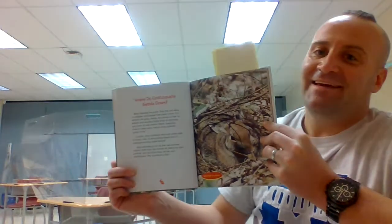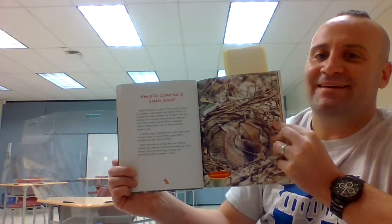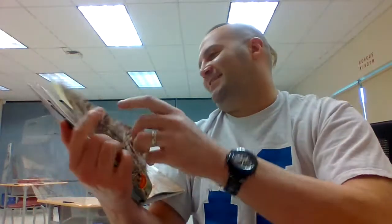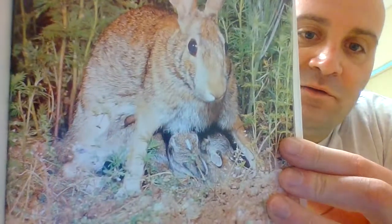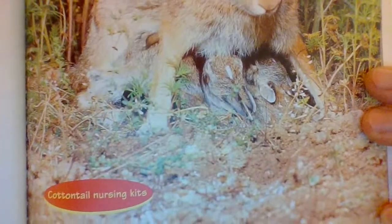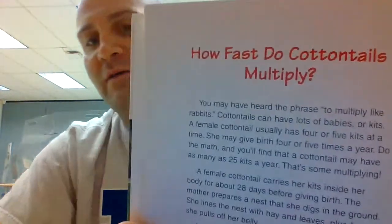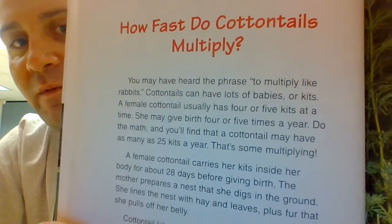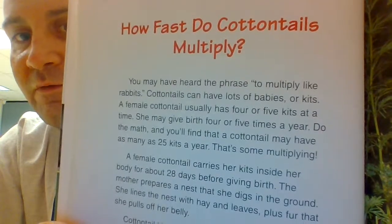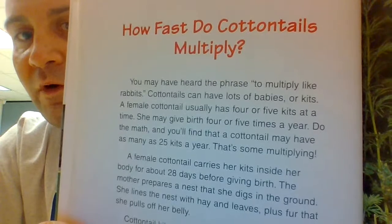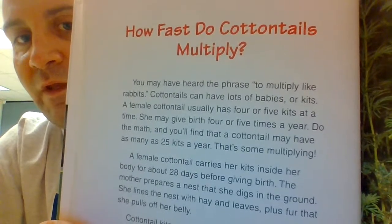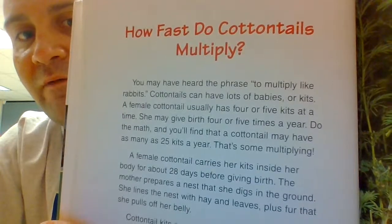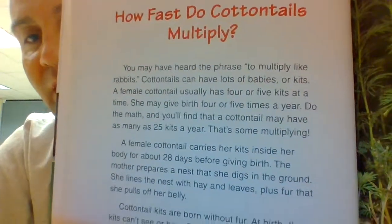Instead, they move into burrows left behind by other animals, such as prairie dogs, skunks, and woodchucks. How convenient — they're very opportunistic; they have someone else make the home for them and just move right in. You may have heard the phrase to multiply like rabbits. Cottontails can have lots of babies, or kits. A female cottontail usually has four or five kits at a time and may give birth four or five times a year. Do the math — a cottontail may have as many as 25 kits a year. That's some multiplying.